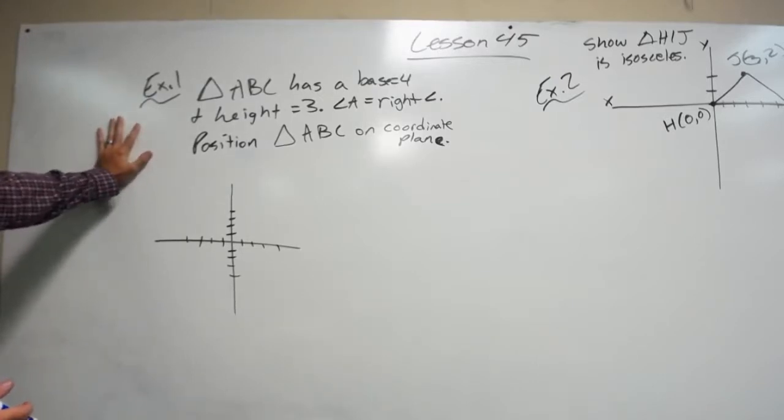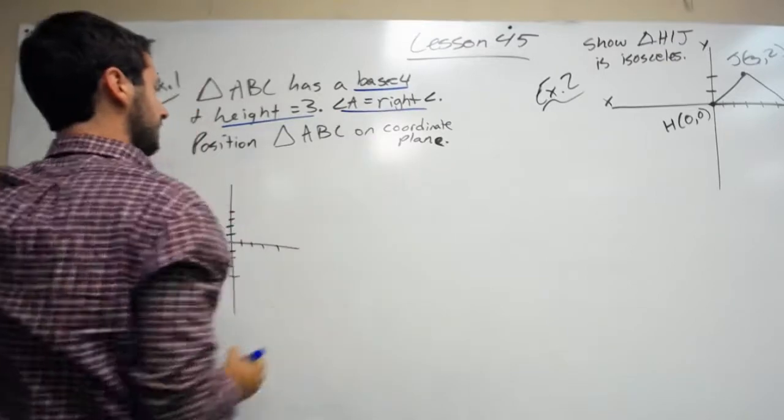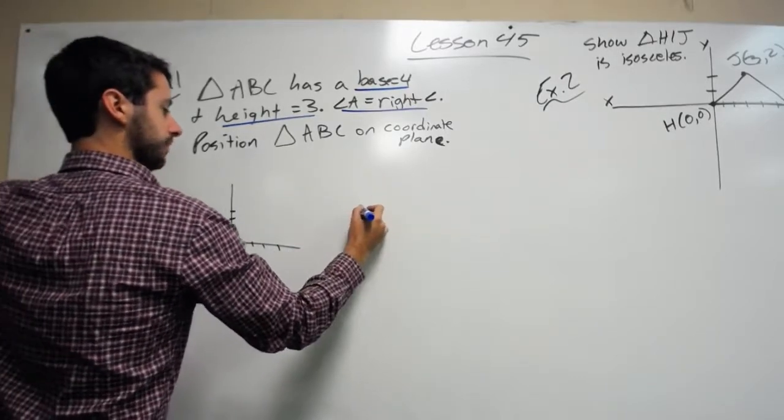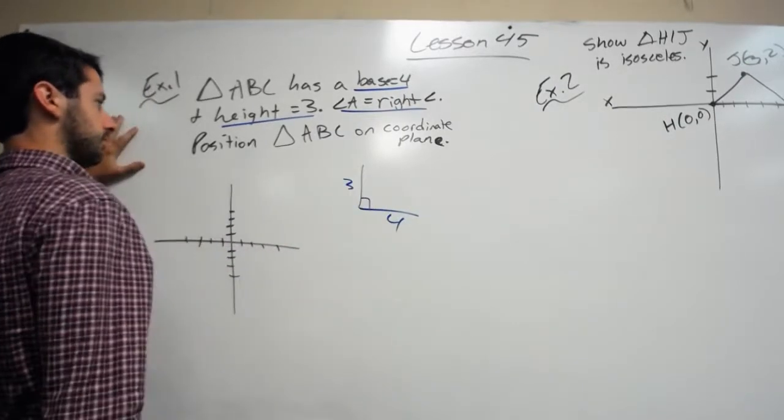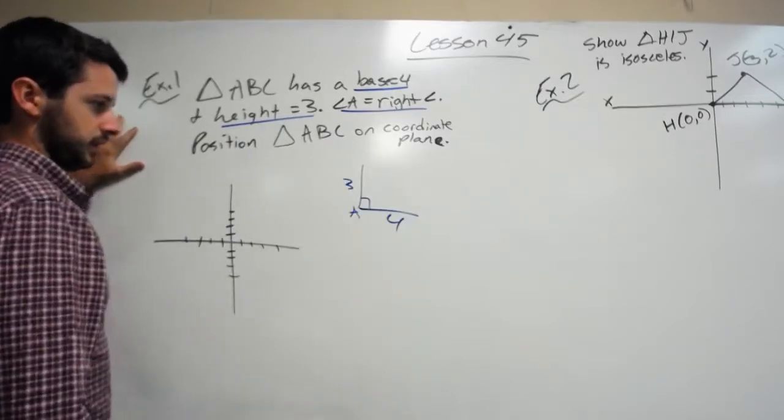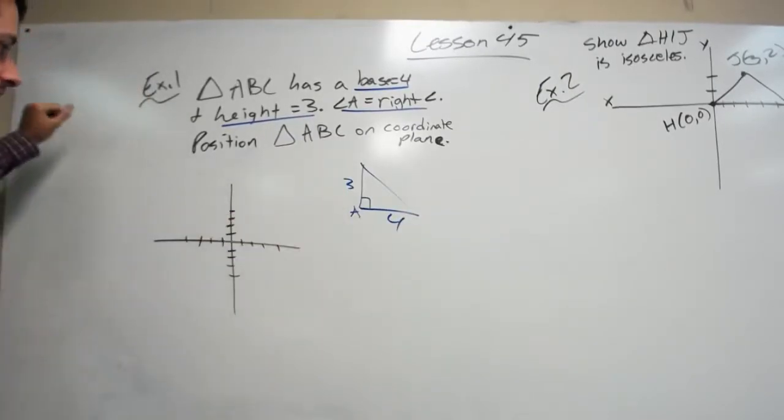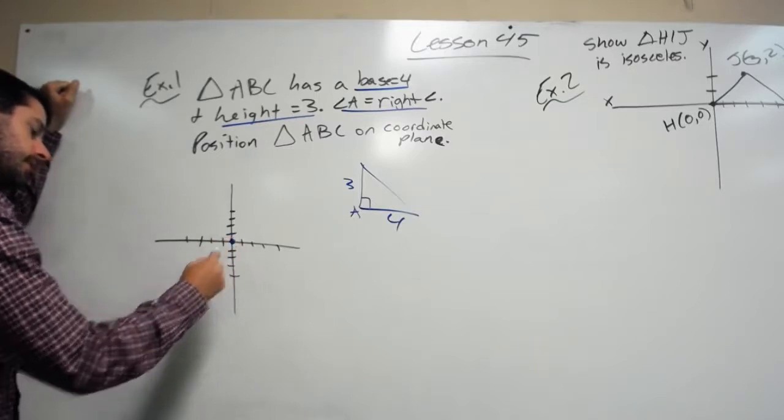It says triangle ABC has a base of 4 and a height of 3. Angle A is a right angle. Position triangle ABC on the coordinate grid. So whenever we do these word type of problems, we always got to look at what does it give us because it gives us information for a reason. If I was just drawing a triangle, we know that it has a base of 4, a height of 3, well the height is always perpendicular. And it does say that angle A is a right angle. So we need to use this to place our triangle on the coordinate grid. Well, the easiest way to do this is going to be to start at the origin. This is going to be our starting point.